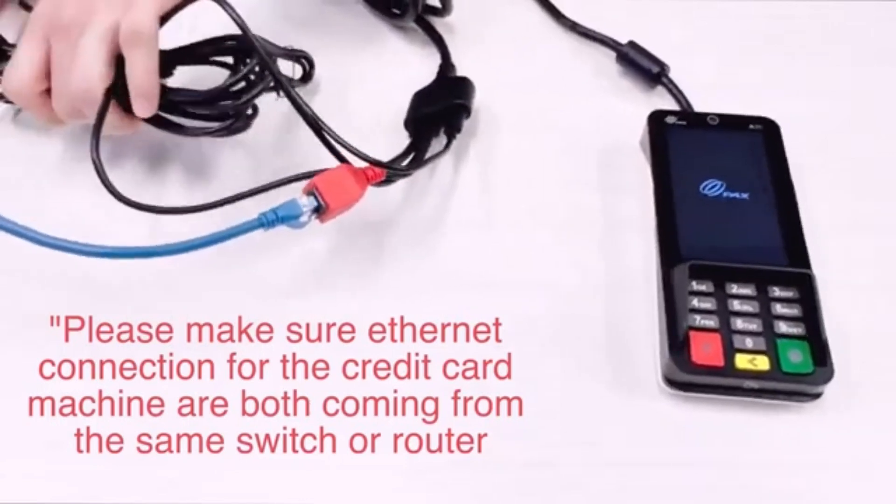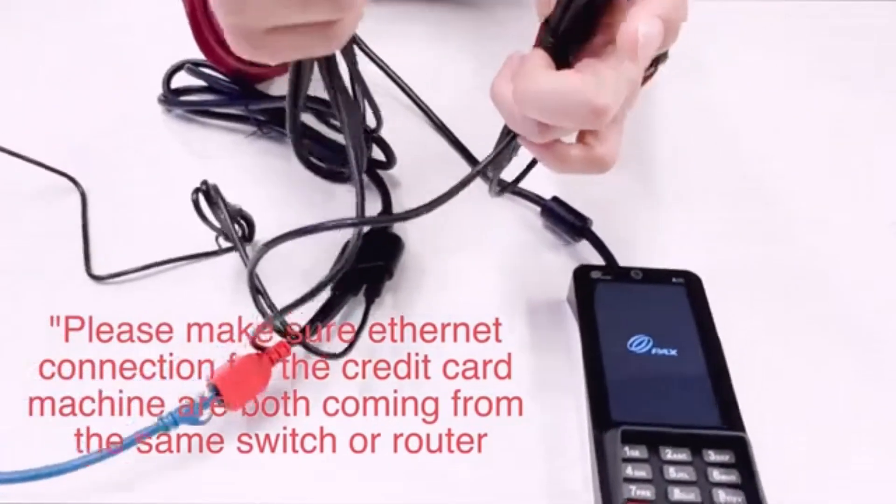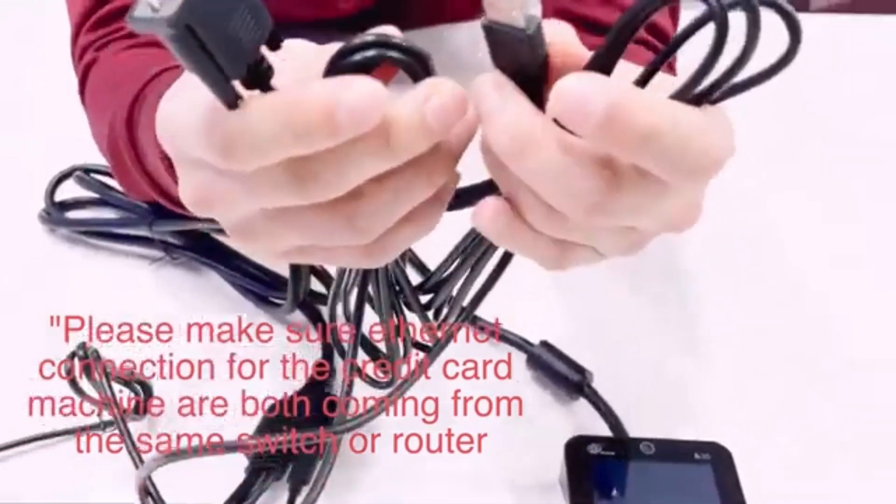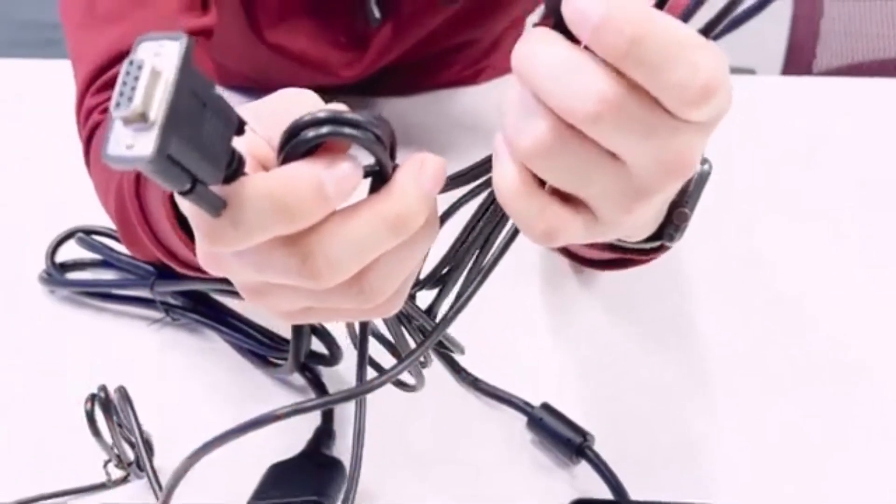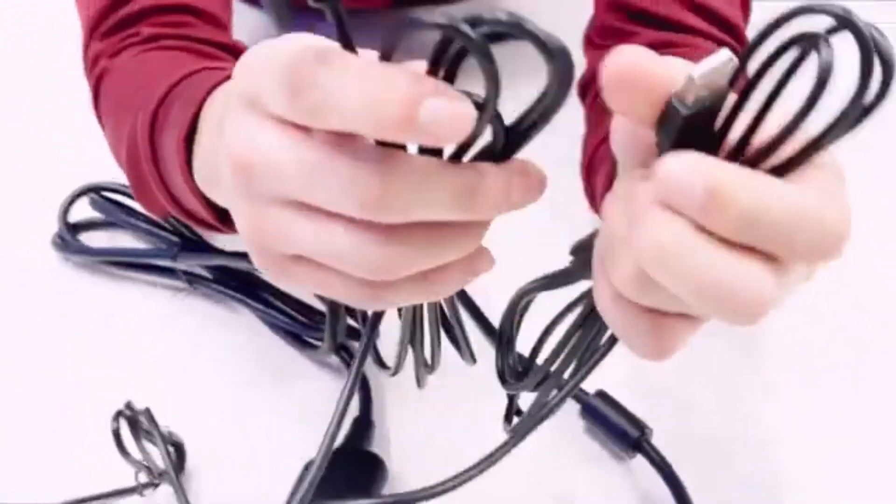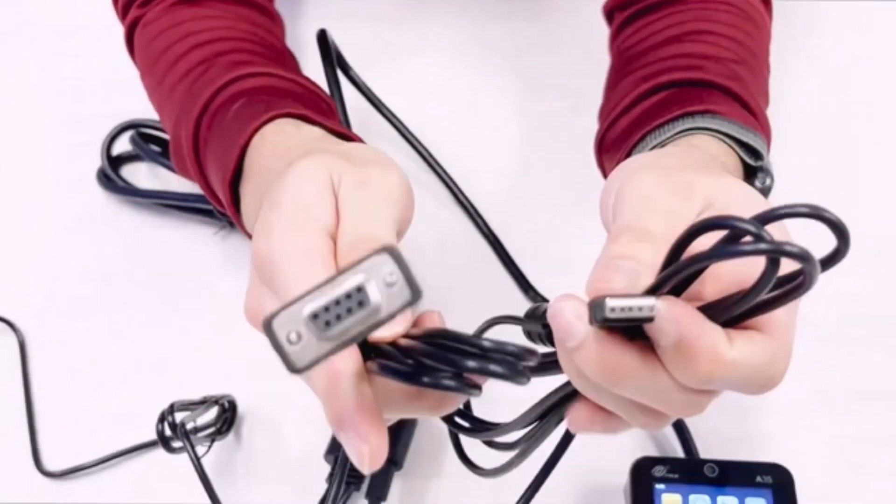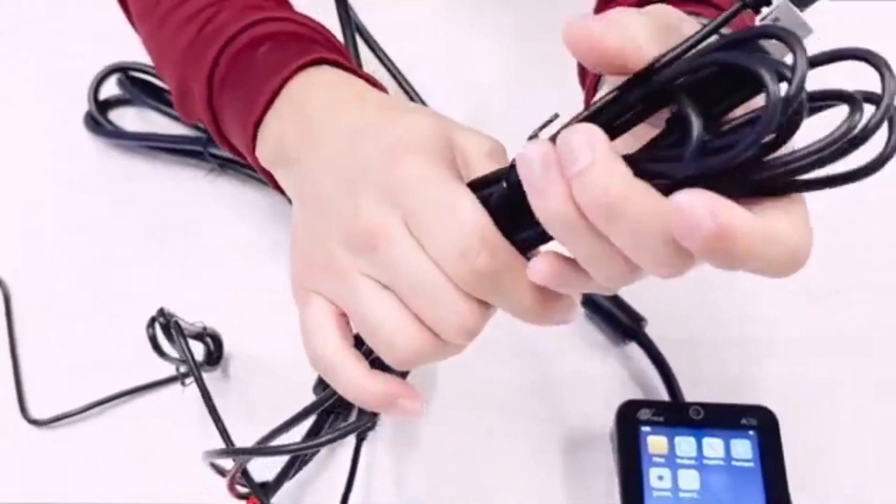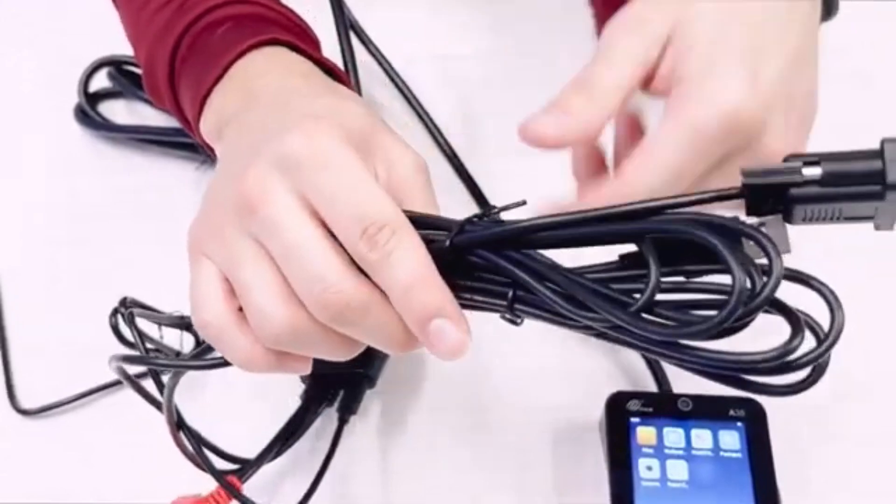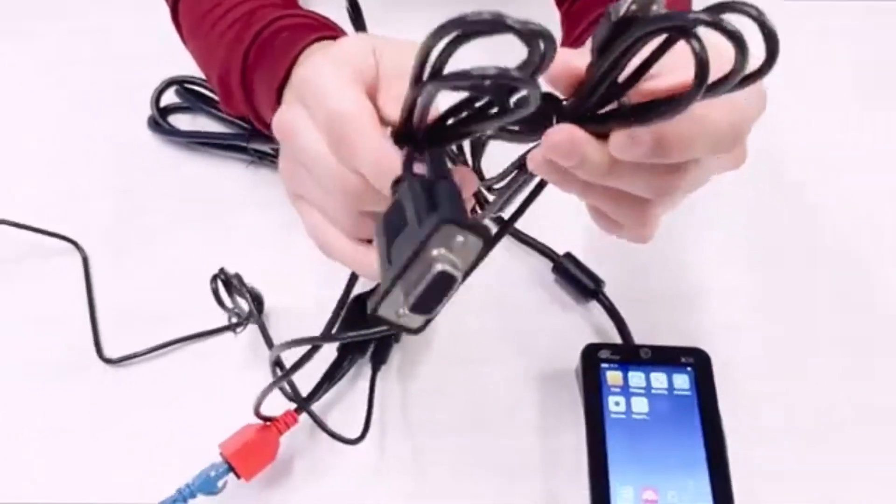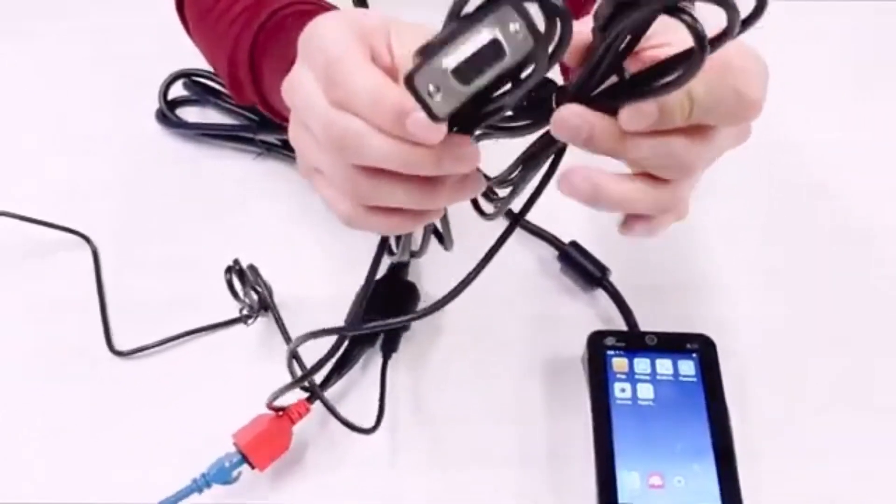Now one thing we'll want to go over is you'll notice these two cables here on the actual main power. This is a USB-A, and this is just a VGA cable. We are not going to be using these at all. Usually whenever payment services sends these out, they wrap them up in tape. But still, please make sure that your customers are not plugging these cables in.